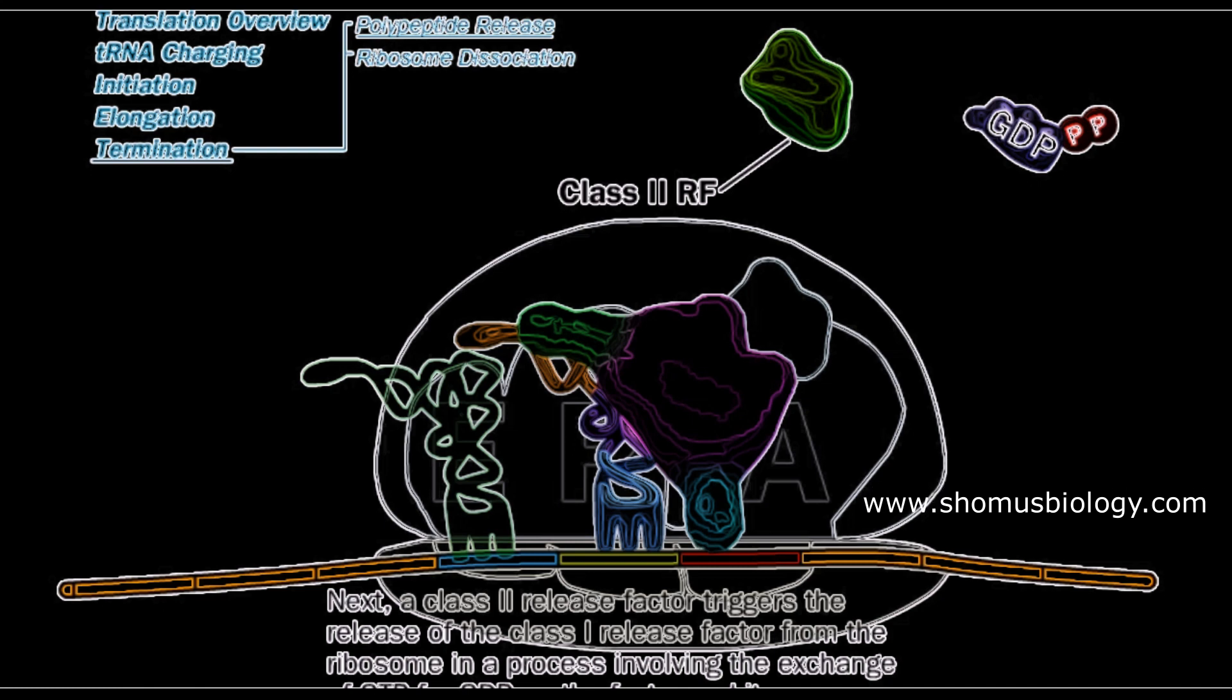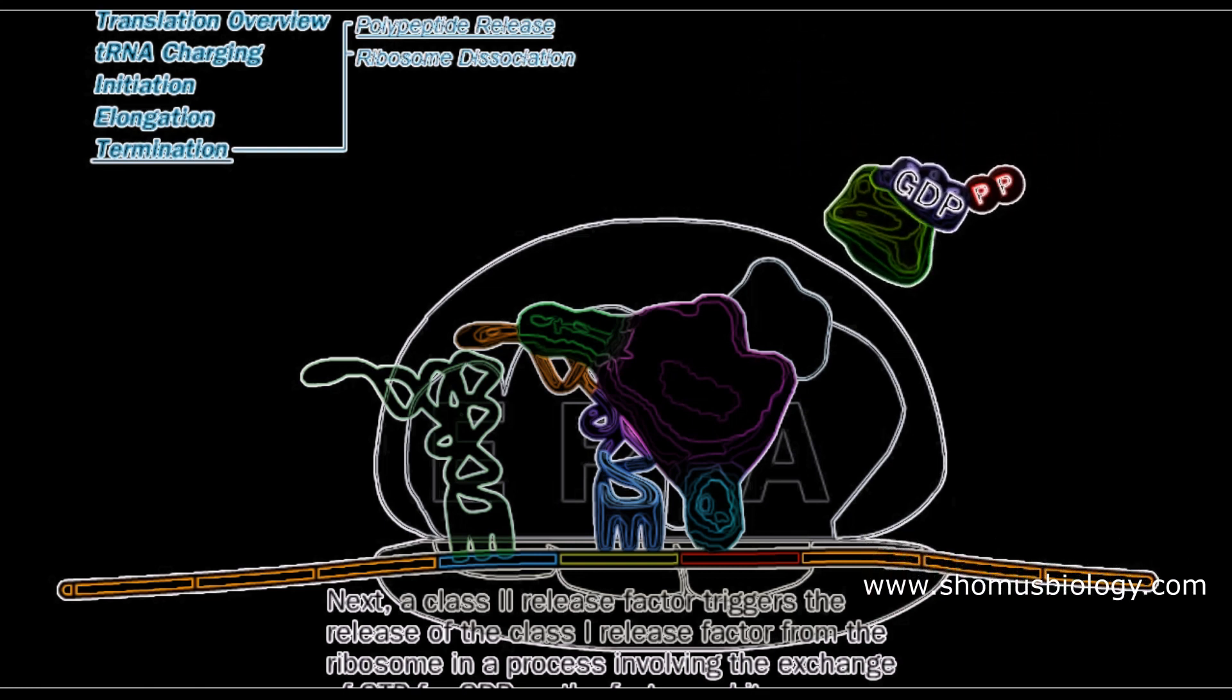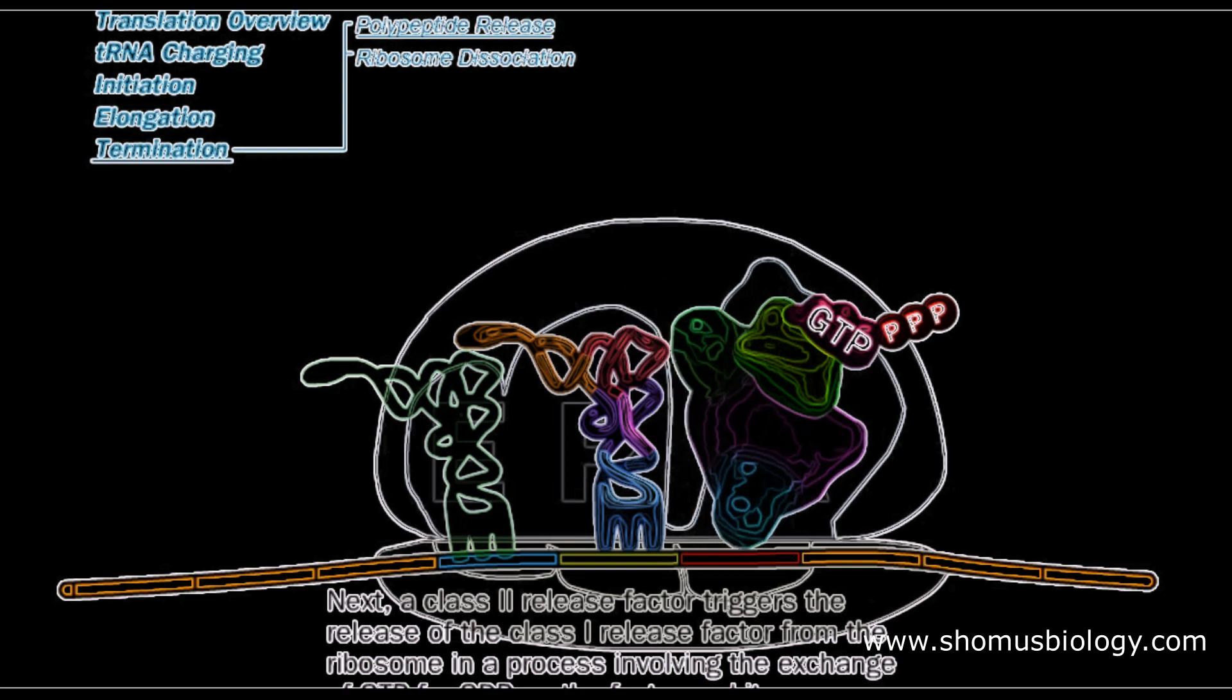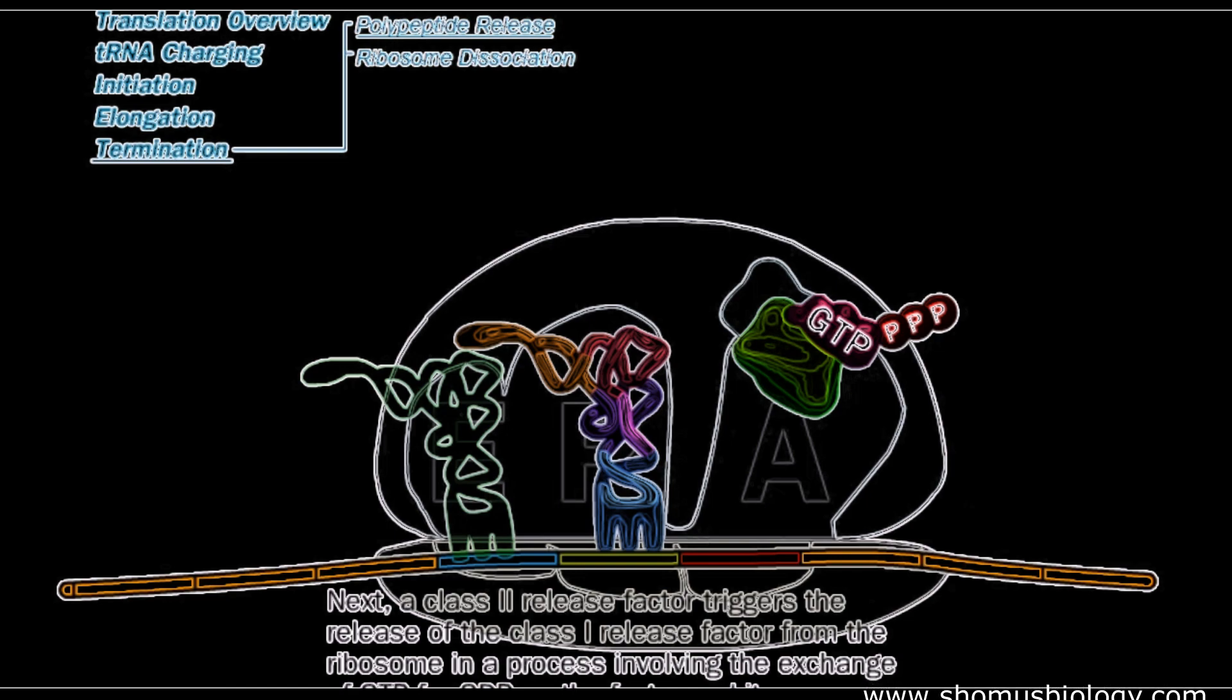Class 2 release factor's job is to release class 1 release factor. Class 2 release factor works inversely - it brings GDP with itself, not GTP. Once it associates with the factor binding site in the A site, it transfers GDP to GTP, then hydrolyzes GTP back to GDP and dissociates.